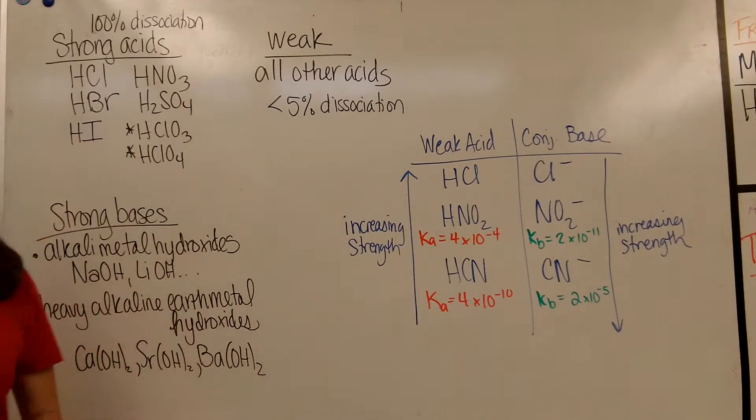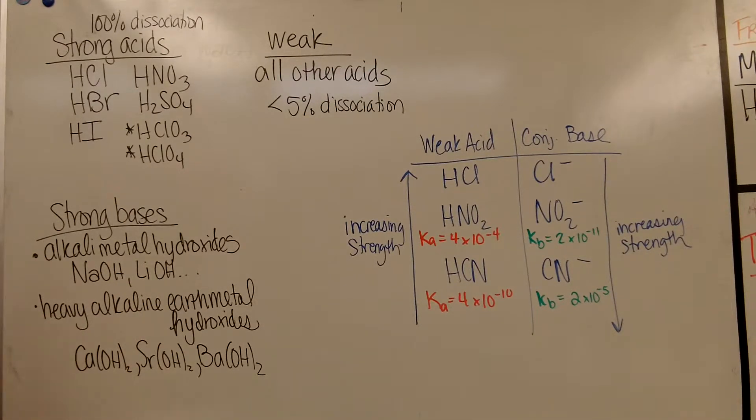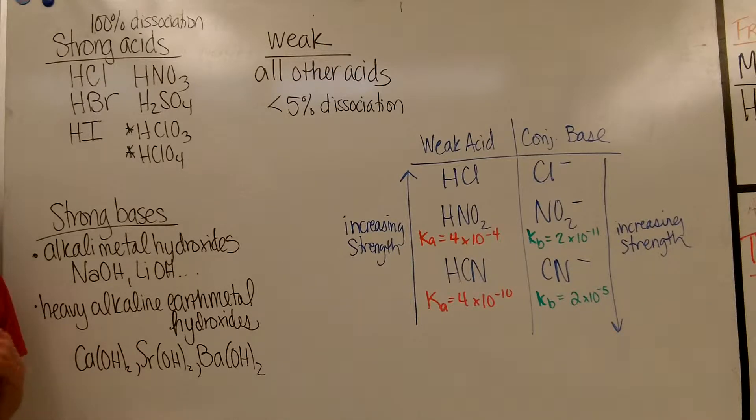Okay, so this video is going to talk about strong and weak acids and bases, and there are seven strong acids that you should know. I put stars by two of them because they're less common, but the ones you definitely should know are HCl, HBr, HI, HNO3, and H2SO4. What makes them strong acids is that when you stick them in water, they will completely dissociate, so 100% dissociation.